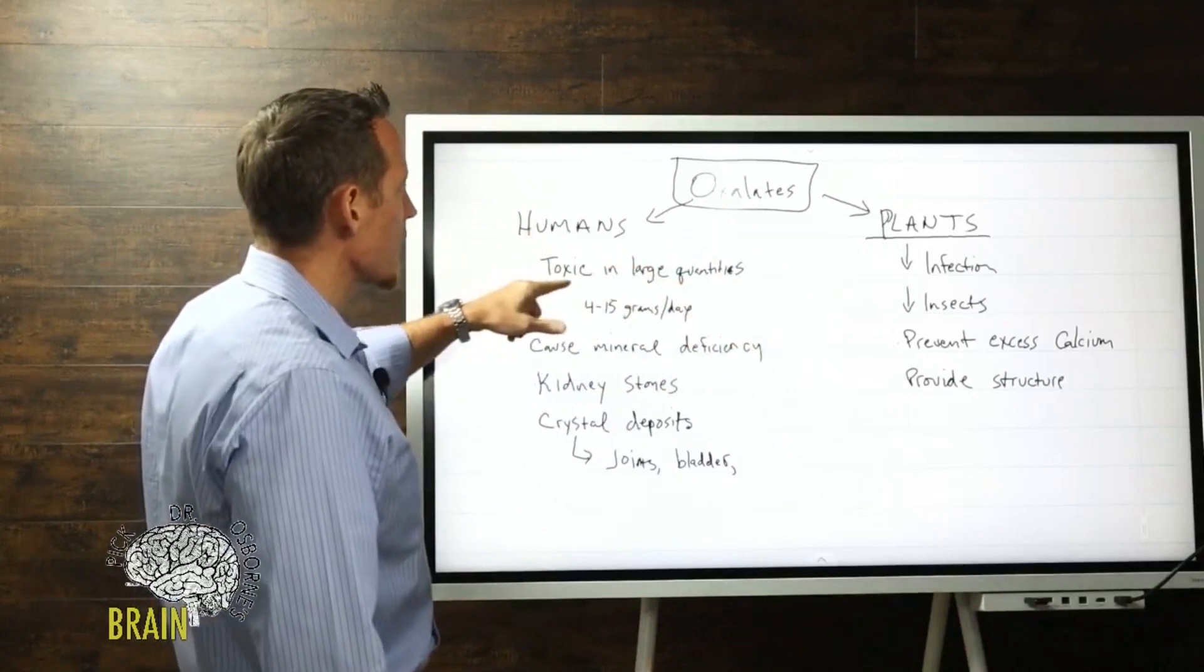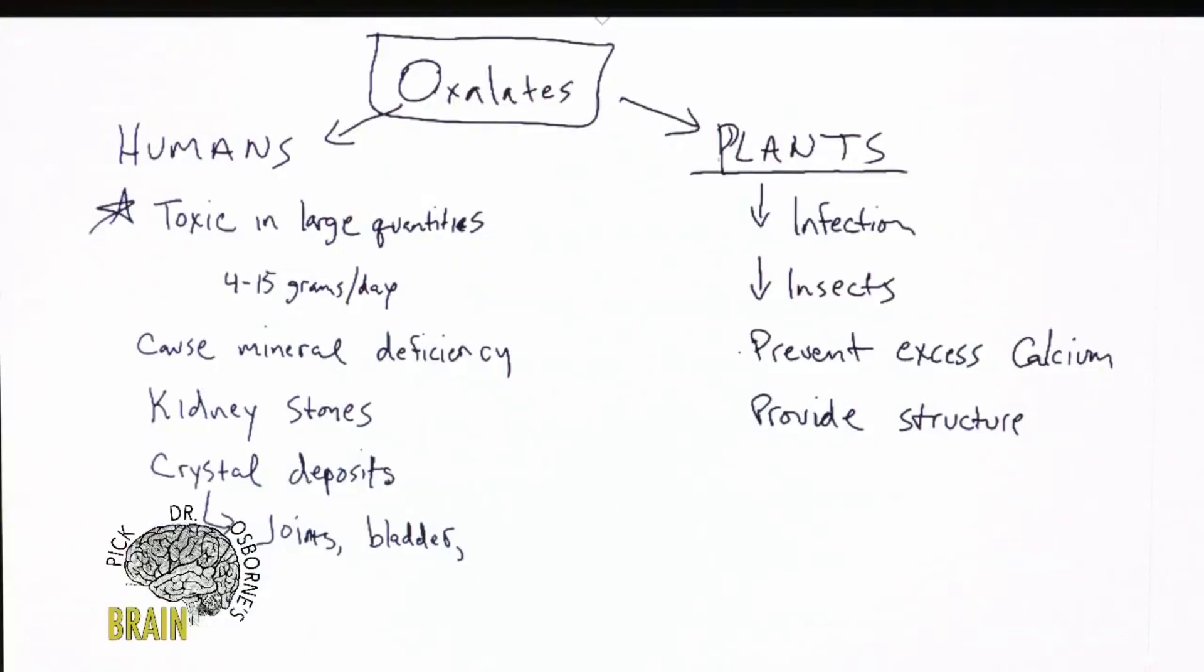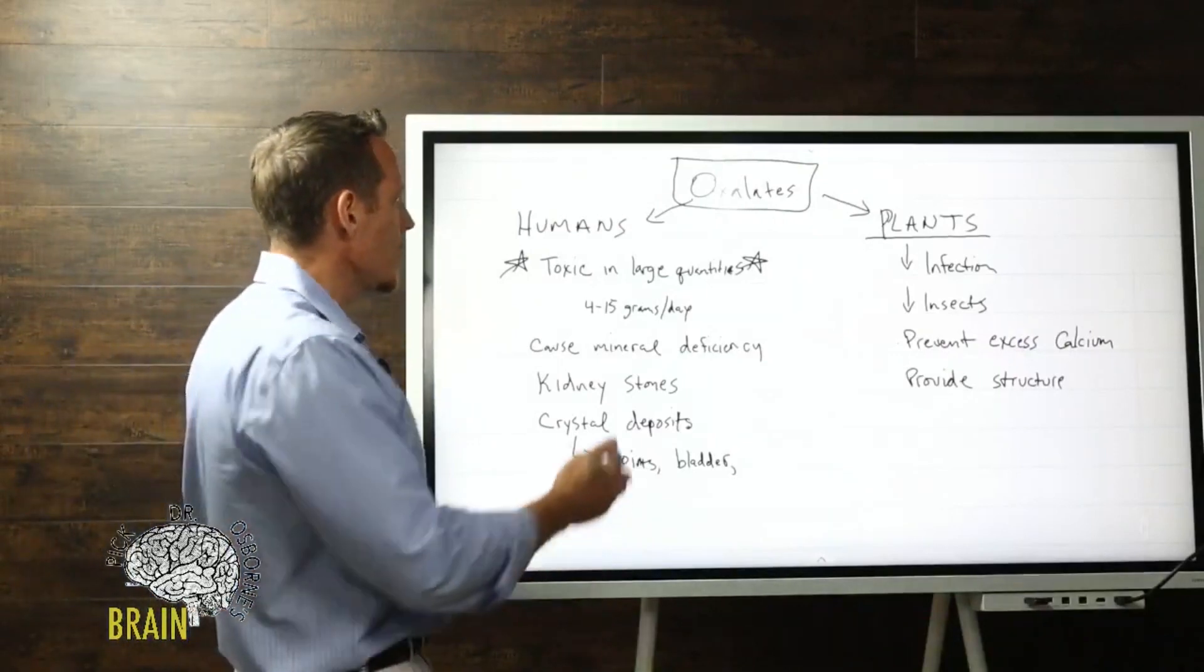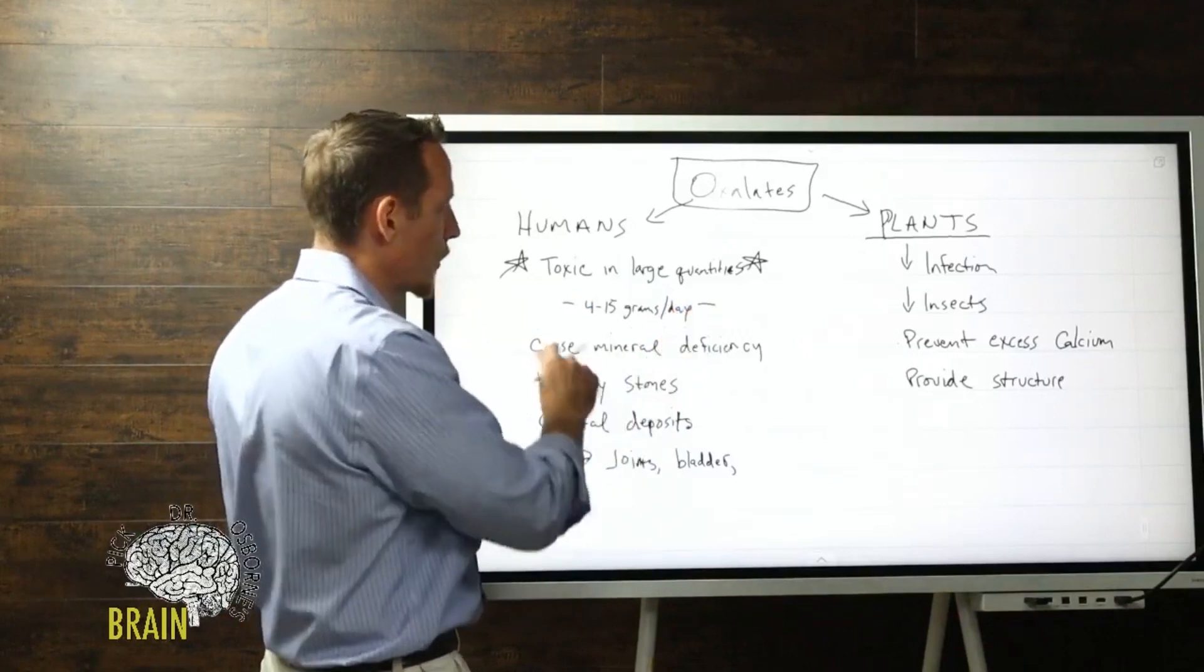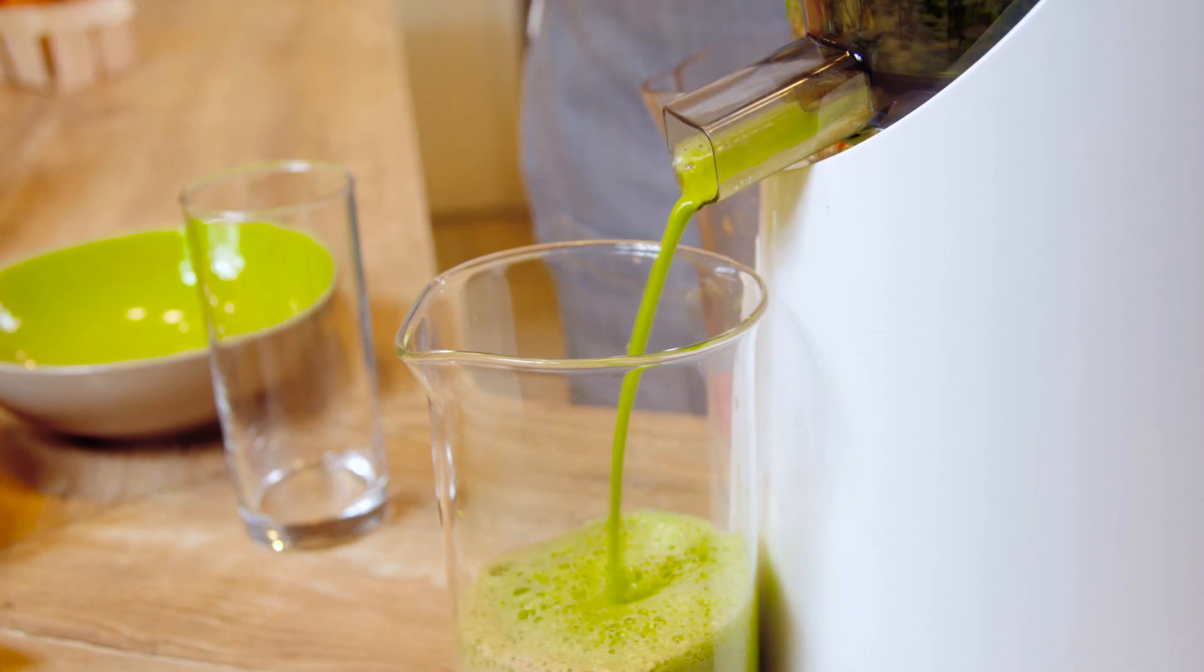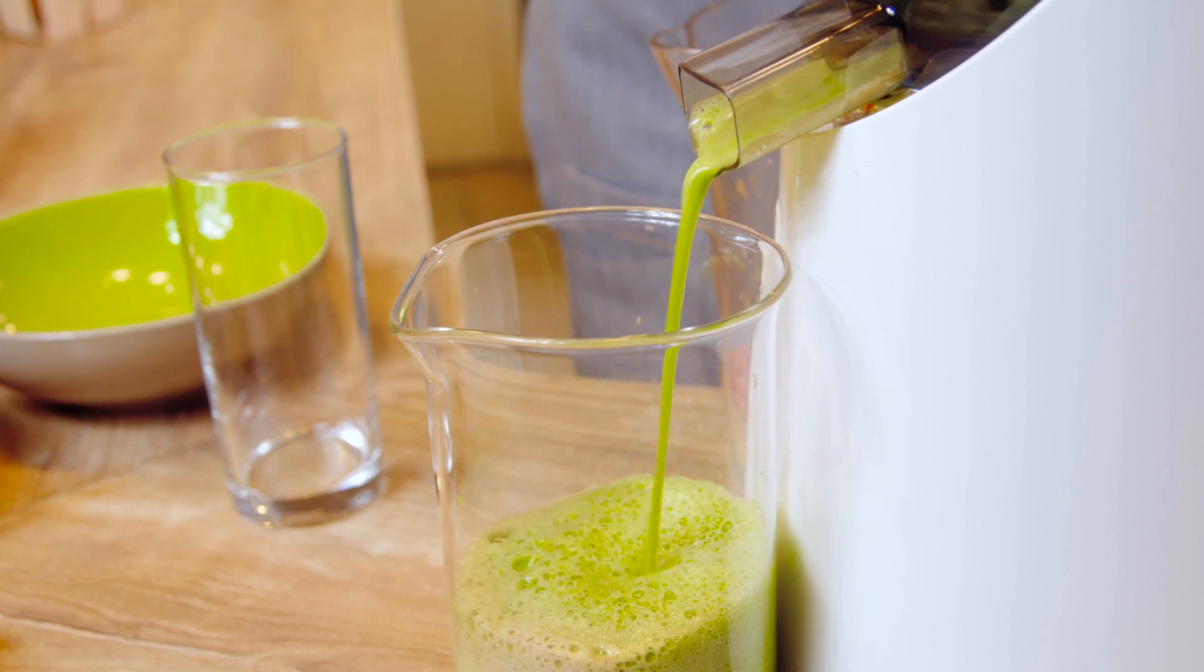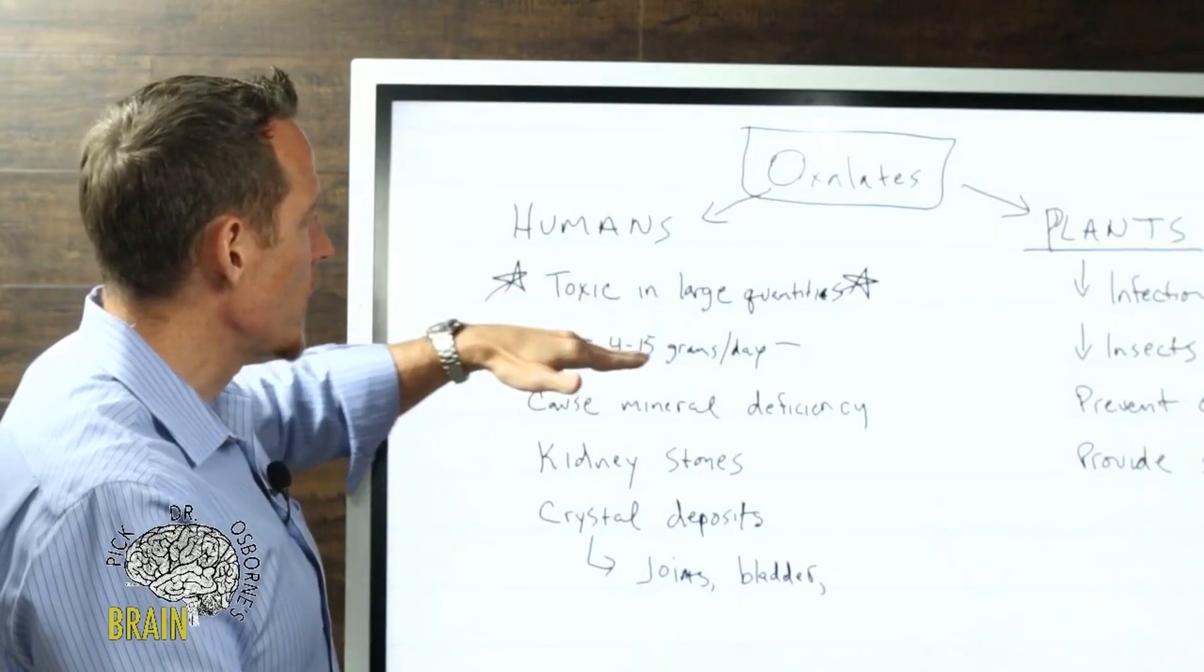In humans, oxalates can be toxic in large quantities. This is important to understand because many of the symptoms of oxalate toxicity can mimic the symptoms of gluten sensitivity. Toxicity levels are known to occur between 4 and 15 grams a day - that's a pretty big range. If you're doing big smoothies, juicing mass quantities of spinach, it's going to take quite a bit to achieve this level.